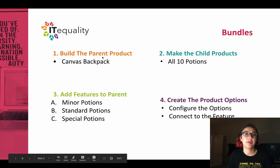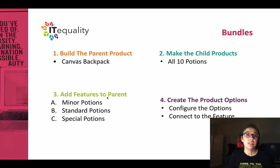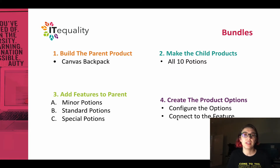Step one: we're going to build the parent product — I've already done that, and I'll show you in the live demo portion. We have our canvas backpack. Step two: we're going to make all 10 child products. Step three: we're going to add the features to the parent — that's the backpack. Step four: we'll create the product options.